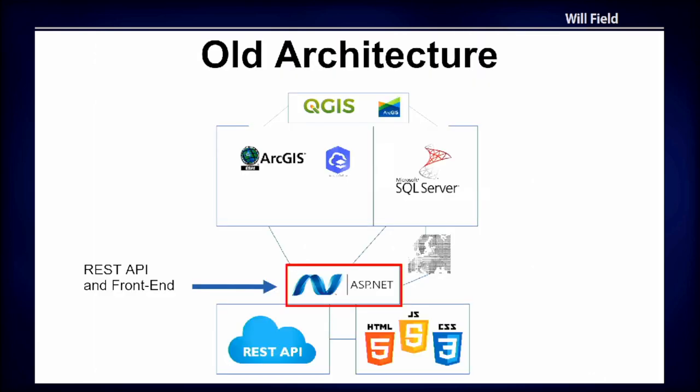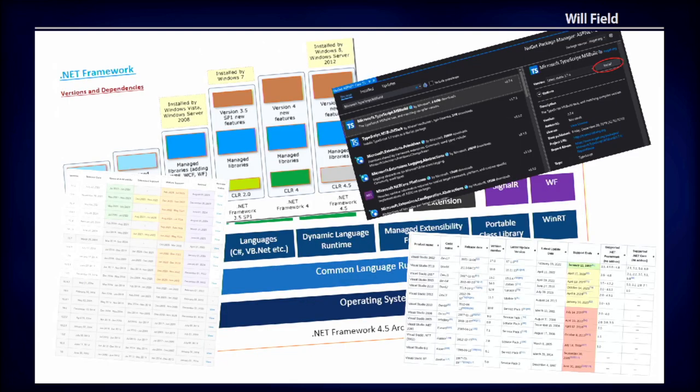We used .NET to build our API and manage our front end. .NET is a very robust solution as long as you're staying within that framework and you don't venture too far from it, because once you do, you have to deal with all sorts of compatibility issues — different versions of .NET, different versions of Windows and IIS and Visual Studio, and then the package manager NuGet. You have to make sure all the dependencies stay up to date, and it's a lot of overhead.